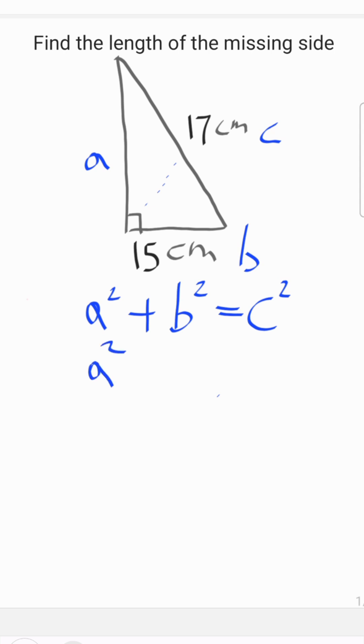So that would leave us a squared plus 15 squared is equal to 17 squared.